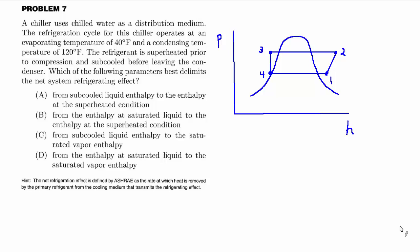Is it A, from subcooled liquid enthalpy to the enthalpy at the superheated condition, B, from the enthalpy at saturated liquid to the enthalpy at superheated condition, C, from subcooled liquid enthalpy to the saturated vapor enthalpy, or D, from the enthalpy at the saturated liquid to the saturated vapor enthalpy.